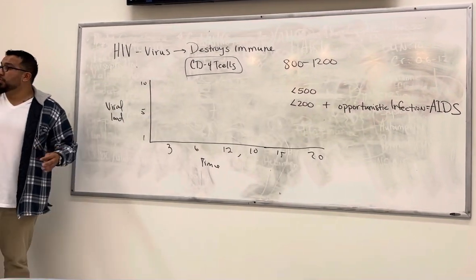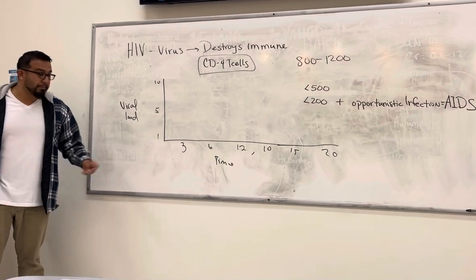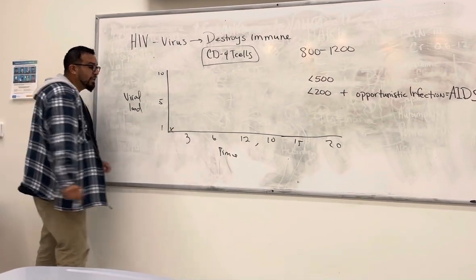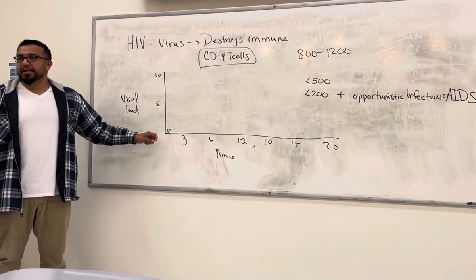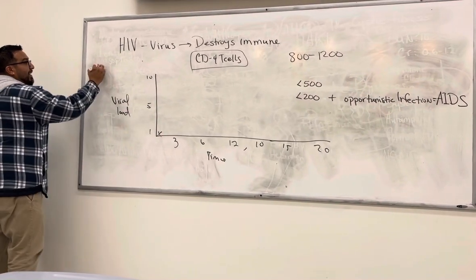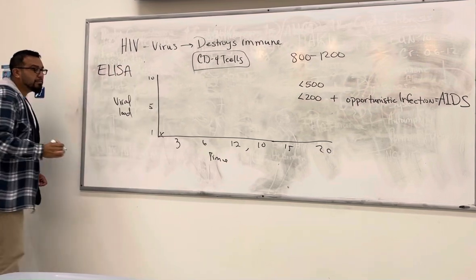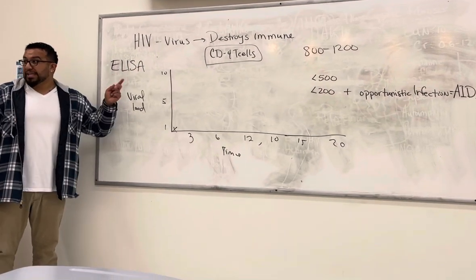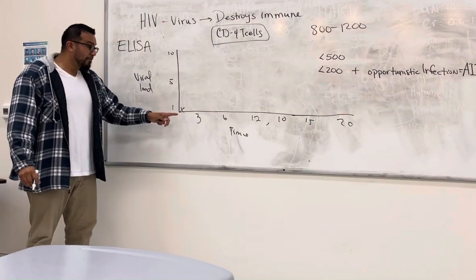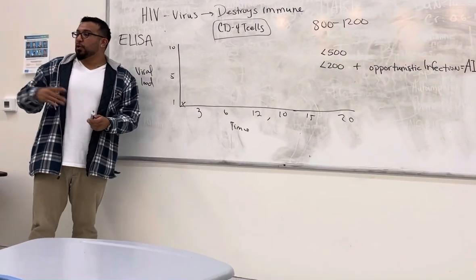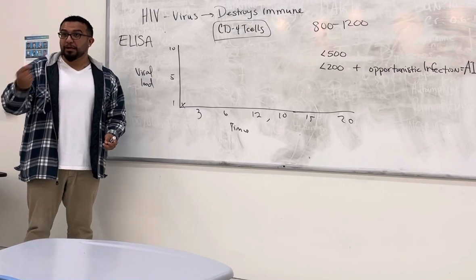So let's say that you expose yourself to HIV on this day. If I go to the blood, to the doctor, and I get a blood test, which is known as an ELISA test. This checks for the antibodies, for the presence of HIV antibodies. So if I get exposed today, and I go do the ELISA test, will it come back positive?